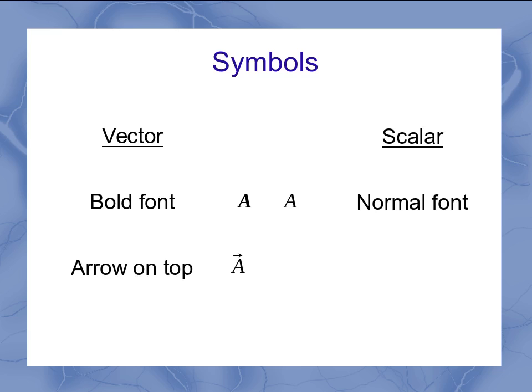And so if you've got a vector, you're going to want to have that arrow on top. So if you have one quantity that's written with an arrow on the top, you know that quantity is a vector. If it's in just a normal font without the arrow on top, it's probably a scalar.